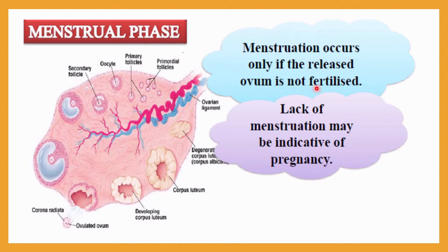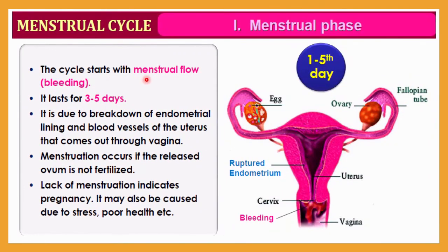During the menstrual phase, menstruation occurs only if the released ovum is not fertilized. If a female does not have menses after 28 days, this lack of menstruation may be indicative of pregnancy. The menstrual cycle starts with menstrual flow, or bleeding, in which the endometrium comes out along with blood, and it lasts for three to five days.